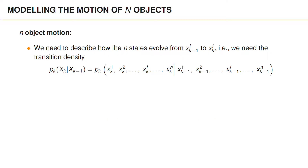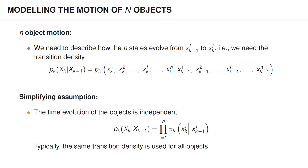Modeling the motion for n-objects means that we need to describe how the states evolve from time k-1 to time k, so we need a transition density for all the n-objects. We make a simplifying assumption in n-object tracking, which is that the time evolution of the objects is independent. The n-object transition density is a product of a transition density pi for each individual object, and typically the same transition density is used for all objects.